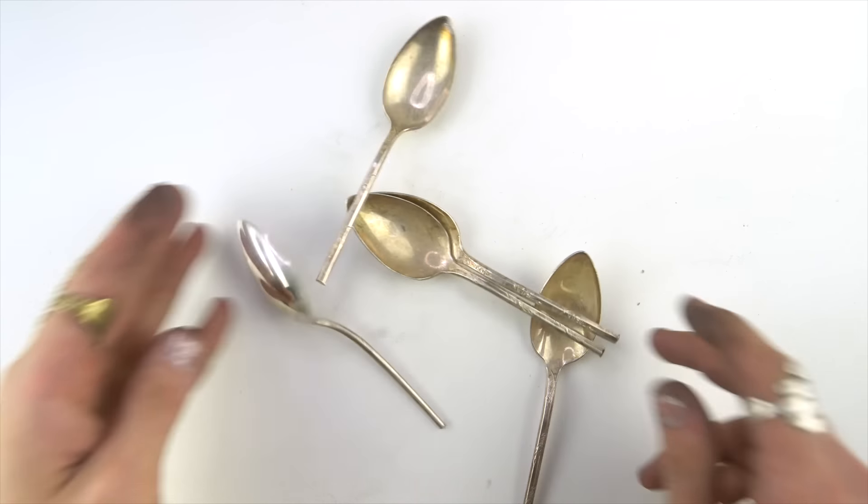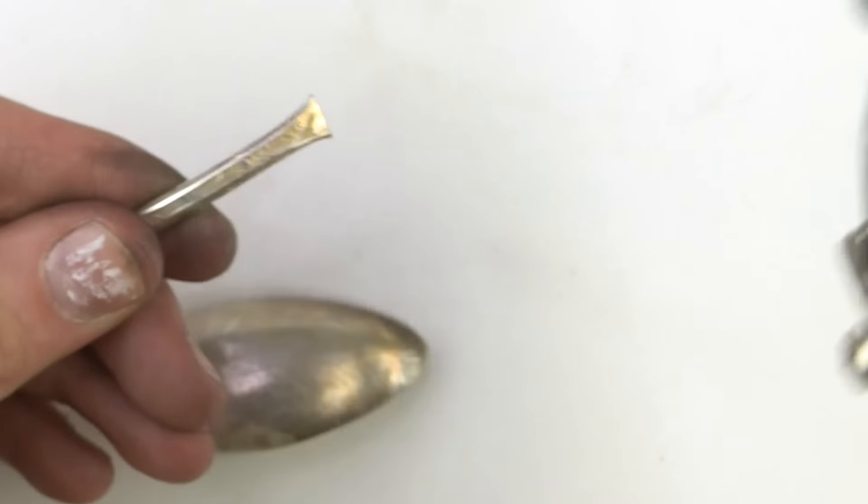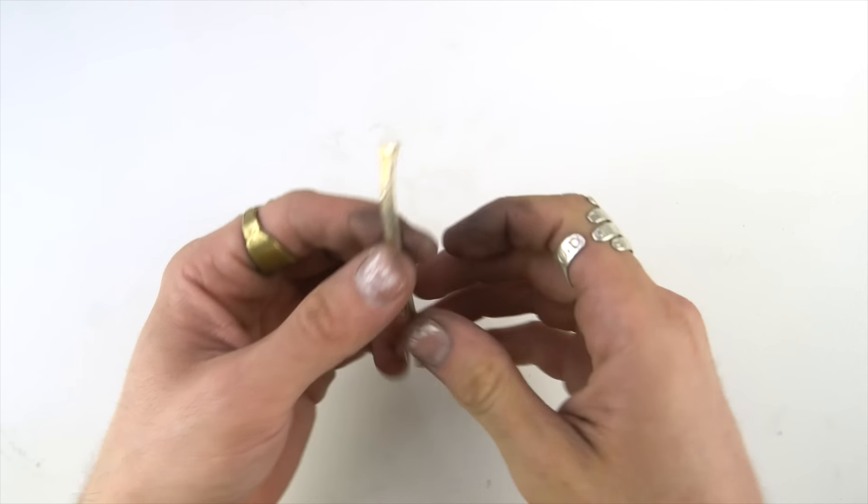So now I have all these extra half spoons. So what we're going to do is just cut off the actual spoon part and use the rest of this handle to make a cute little ring.